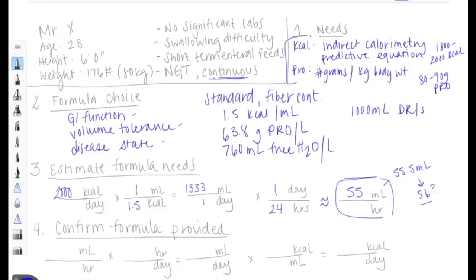So now that we've determined what our estimated formula needs are, let's confirm how much formula we're actually going to provide. This patient is getting 55 milliliters per hour for 24 hours throughout the day. That's actually going to give an exact total of 1,320 milliliters per day. If we want to convert that to energy, we can use our one and a half kcals per milliliter to convert that all the way to 1,980 kcals per day.